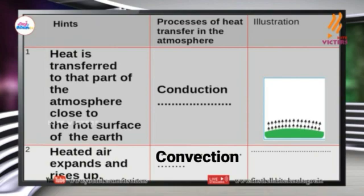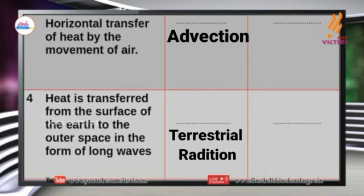Heat and air expands and rises up — Convection. Horizontal transfer of heat by the movement of air — Advection. Heat is transferred from the surface of the Earth to the outer space in the form of long waves — Terrestrial Radiation. If you like this video, please like and comment. I will show you the next video.